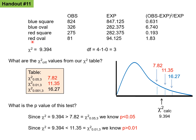After those calculations, a chi-squared value of 9.394 was obtained with 3 degrees of freedom. From the chi-squared critical value table for 3 degrees of freedom, the critical value at alpha = 0.05 is 7.82 and at alpha = 0.01 is 11.35. Our calculated value of 9.394 falls between these two, so the p-value is less than 0.05 but greater than 0.01.